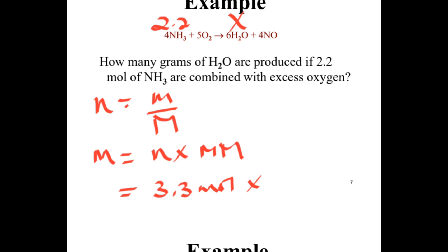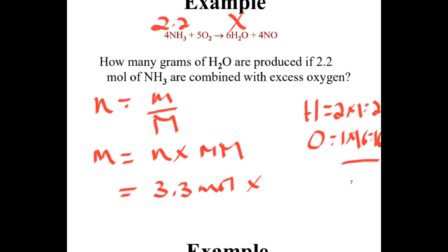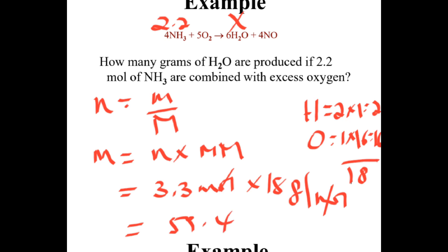The molar mass of water is: hydrogen times 2 plus oxygen times 16 equals 18 grams per mole. So mass equals moles times molar mass: 3.3 moles times 18 grams per mole. Grams of water are produced.